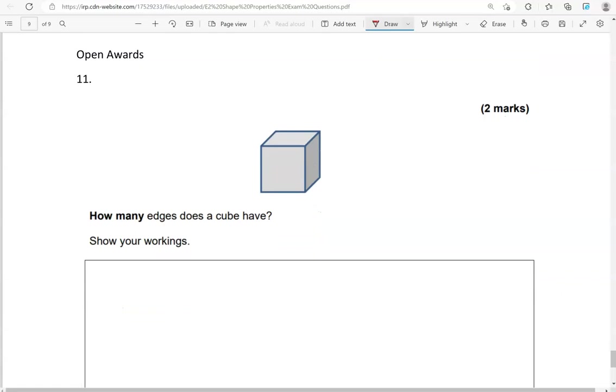How many edges does a cube have? Show your workings. So a cube has 1, 2, 3, 4, 5, 6, 7, 8, 9, 10, 11, 12 edges.